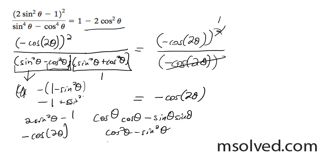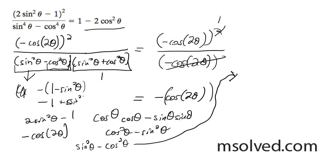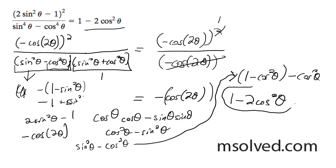I forgot to distribute my minus sine, so I actually end up with sine squared theta minus cosine squared theta. So I'm going to take my sine squared and convert it to 1 minus cosine squared theta, and then I have my minus cosine squared theta, and I end up with 1 minus 2 cosine squared theta, which is what we were looking for. And that's how you do it.